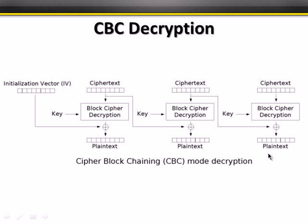XOR is essentially a bit flip. In CBC decryption, we reverse the chaining process: we take the ciphertext with the key, output the initialization vector and plain text, then XOR again with the next ciphertext block to recover each plain text block in sequence.